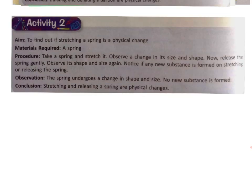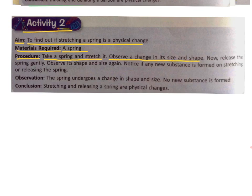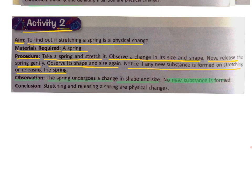Activity 2. Aim: to find out if stretching a spring is a physical change. Materials required: a spring. Procedure: take a spring and stretch it, then release it gently. Observe changes in its size and shape, and notice if any new substance is formed. Observation: the spring undergoes a change in shape and size, but no new substance is formed. Conclusion: stretching or releasing a spring is a physical change.